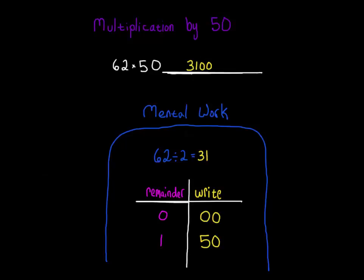Let's do a couple three-digit numbers. 241 times 50. Divide 241 by 2. 2 goes into 2 once, remainder 0. 2 goes into 4 twice, remainder 0. 2 goes into 1, 0 times, remainder 1. So we tack a 50 on the end.